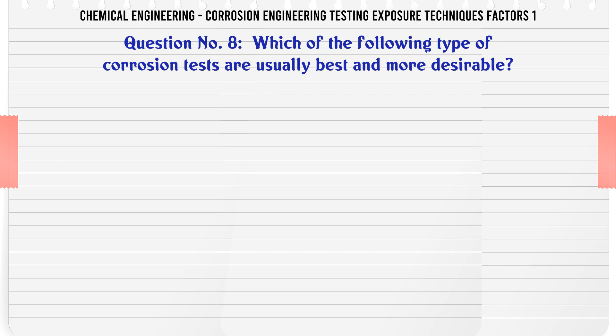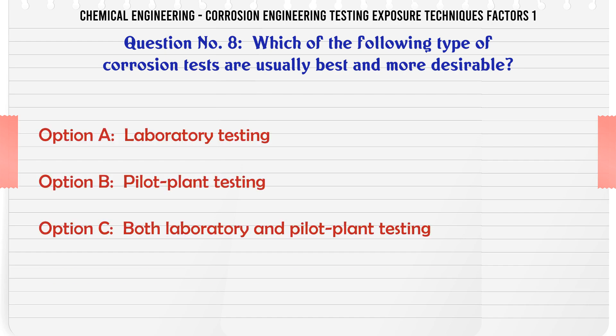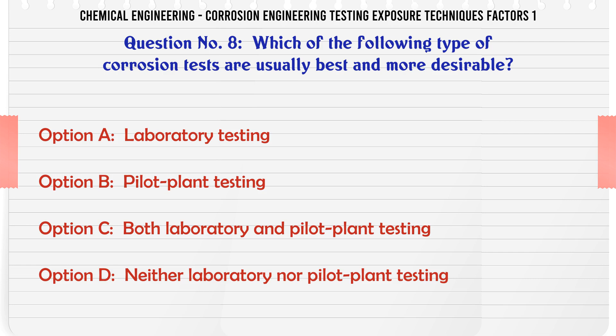Which of the following types of corrosion tests are usually best and most desirable? A. Laboratory testing. B. Pilot plant testing. C. Both laboratory and pilot plant testing. D. Neither laboratory nor pilot plant testing.